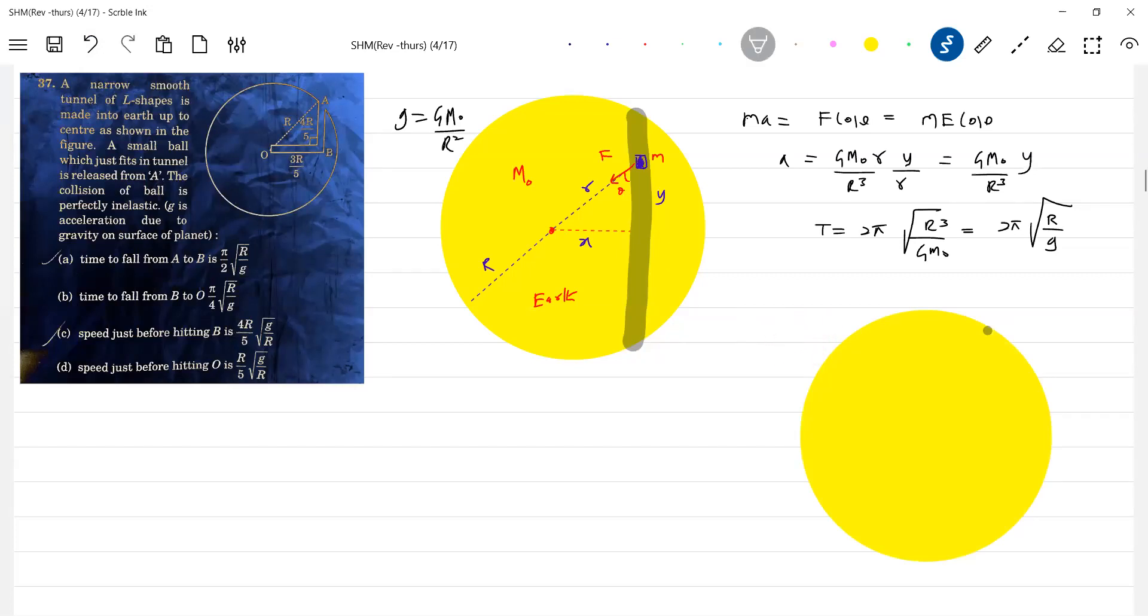If the chord is like this, if the chord is like this, somewhere I'll make the problem a little bit simple. Just see now, this will be the radius, this one only. Now here the particle is here, particle is here, you are going to displace it.